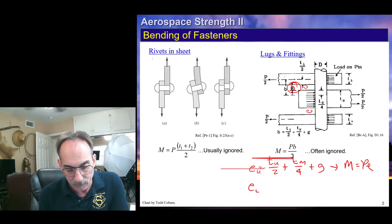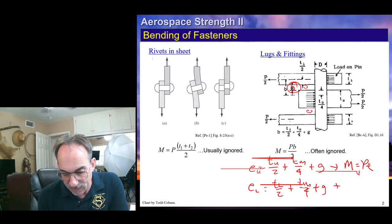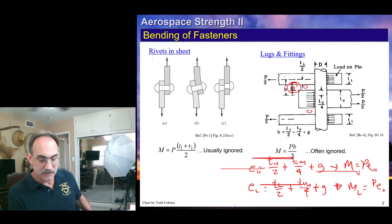We can do the same thing. This is the eccentricity for the upper plate and the eccentricity for the lower plate. If these two plates, upper and lower, have the same thickness, then they will have the same eccentricity. If they have different thicknesses, then this would be T lower over 2, plus T middle over 4, plus any and all gap. The moment for the upper plate, the moment for the lower plate is now PE, where this is E lower and this is E upper.